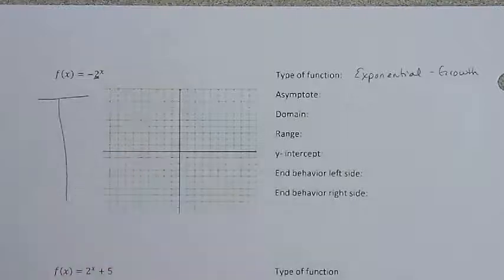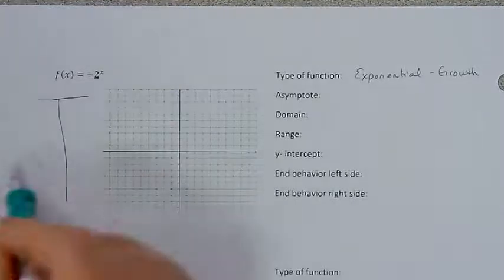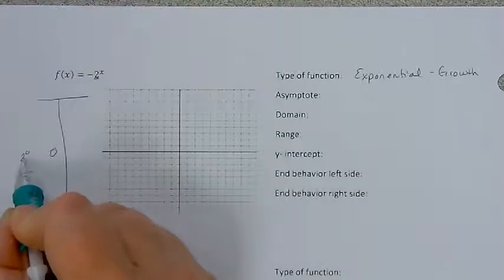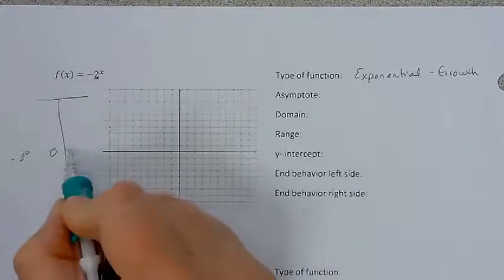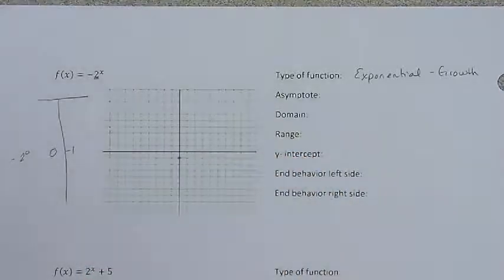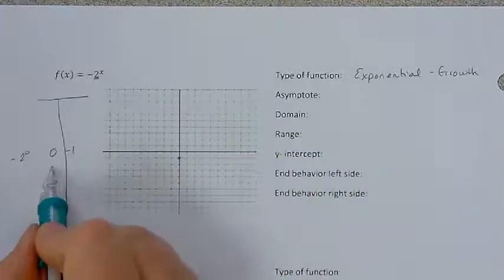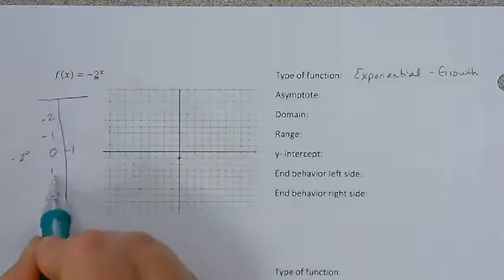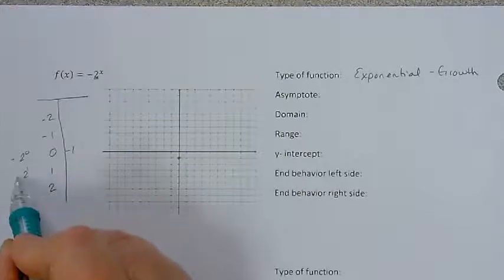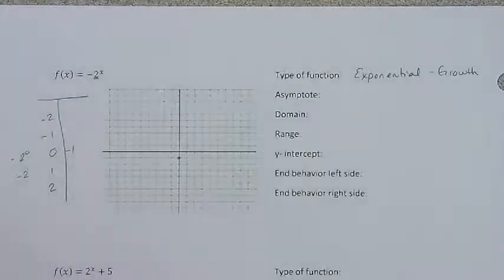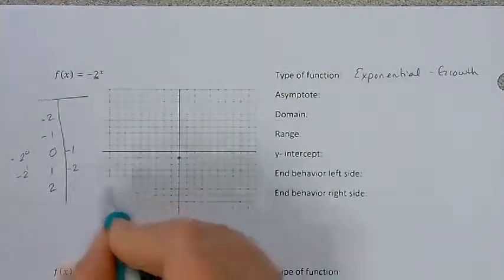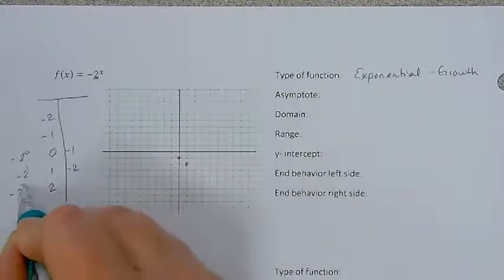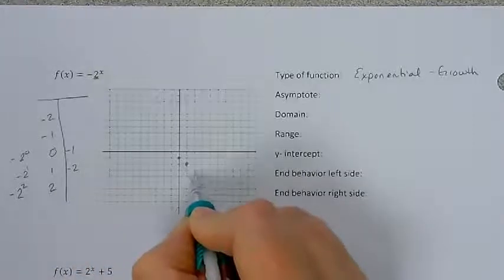I'm going to make a table of values to see what happens here. I always like to start with x equals 0 because I know that 2 to the 0 is 1, and then I'm going to make that negative, so the point (0, -1) is on my graph. I'm going to try a couple numbers bigger than 0: for x=1, I have negative 2 to the first, which would be -2. For x=2, I would have negative 2 squared, which would be -4.